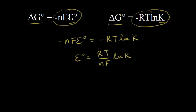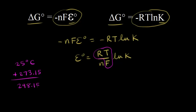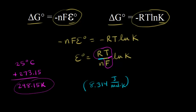Next, we're going to solve for what this is equal to numerically. If we're at 25 degrees C — the standard temperature for the cells we've been discussing — T is in Kelvin, so we convert by adding 273.15, giving us 298.15 Kelvin. R is the gas constant: 8.314 joules per mole times Kelvin. So we multiply 8.314 by our absolute temperature of 298.15 Kelvin.